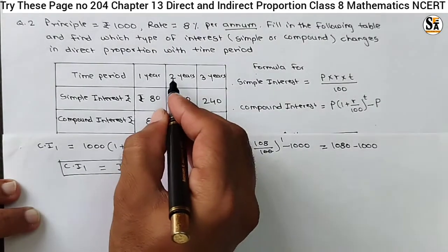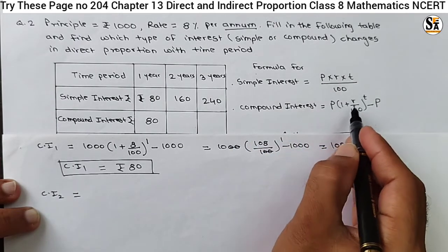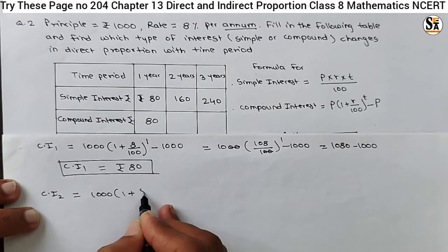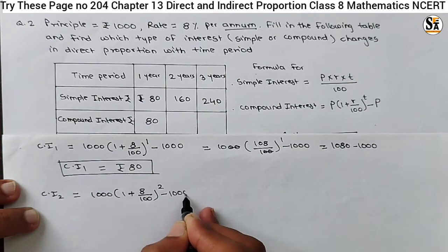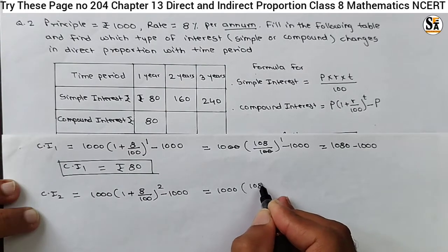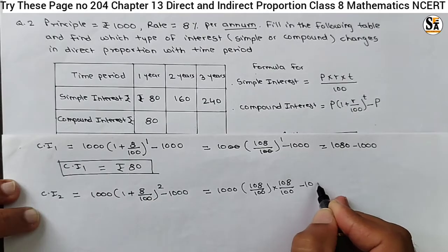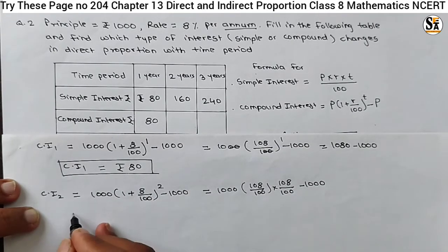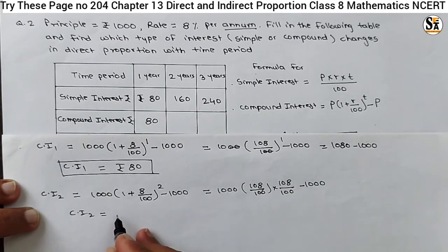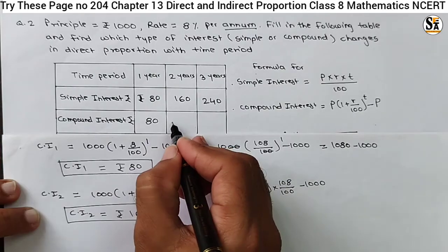For period 2 years, CI2 = 1000 × (1 + 8/100)^2 − 1000 = 1000 × (108/100) × (108/100) − 1000. Solving this, CI2 = Rs 166.4. So compound interest for the period of 2 years is Rs 166.4.